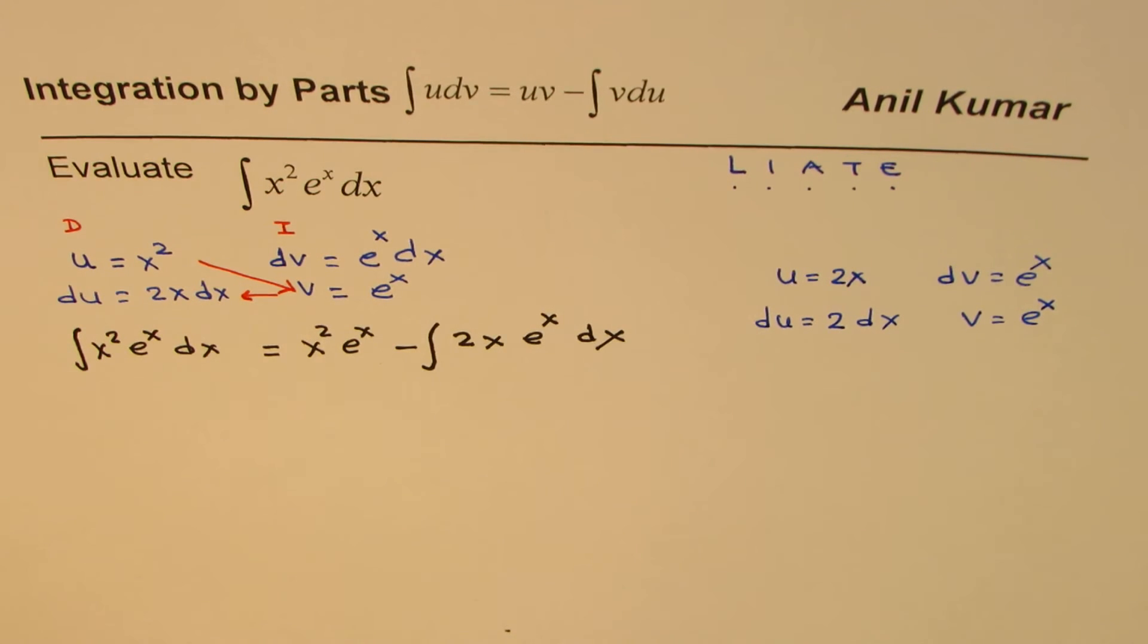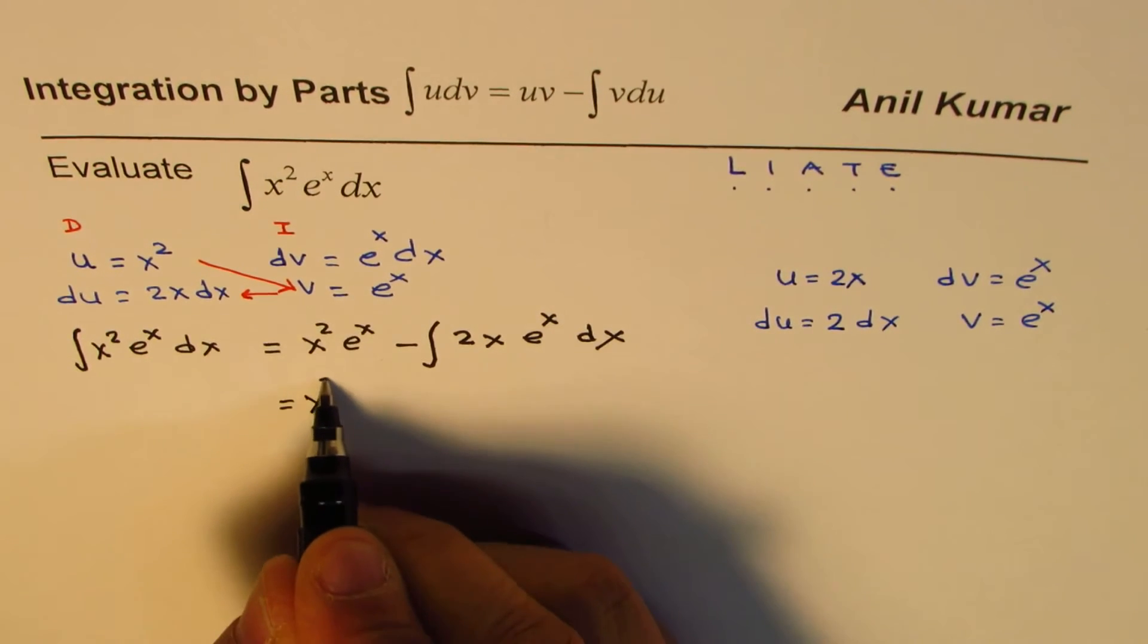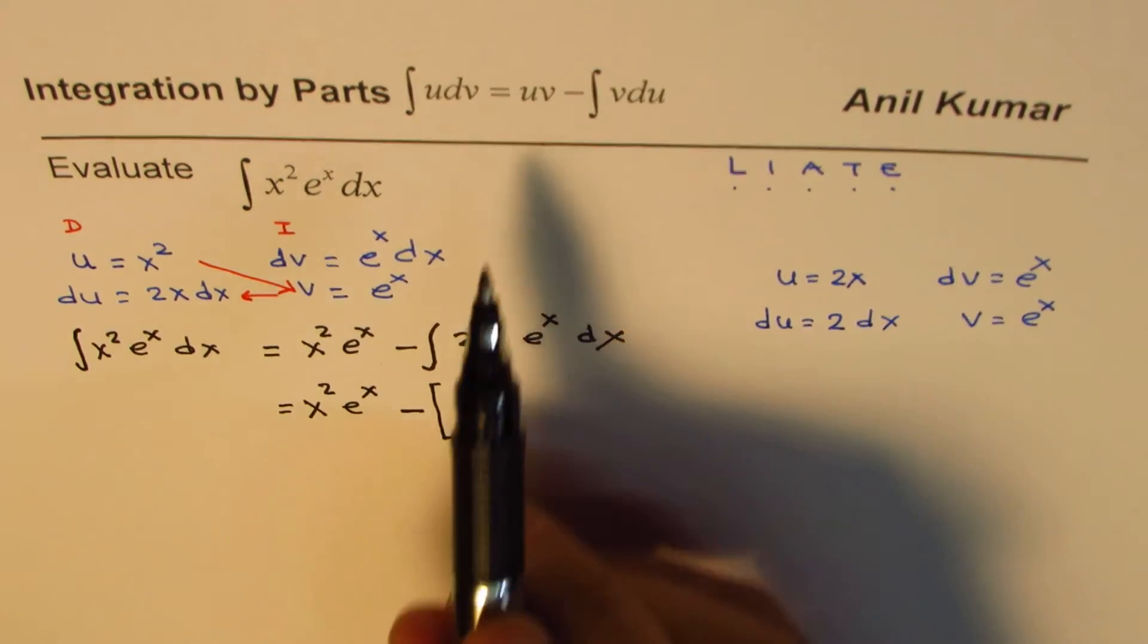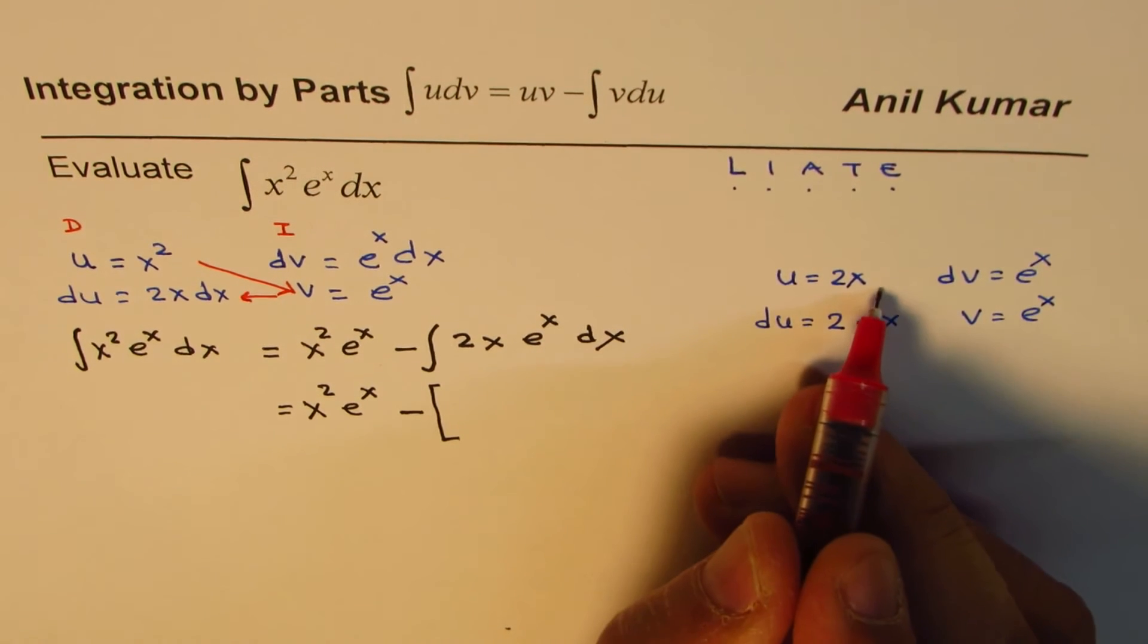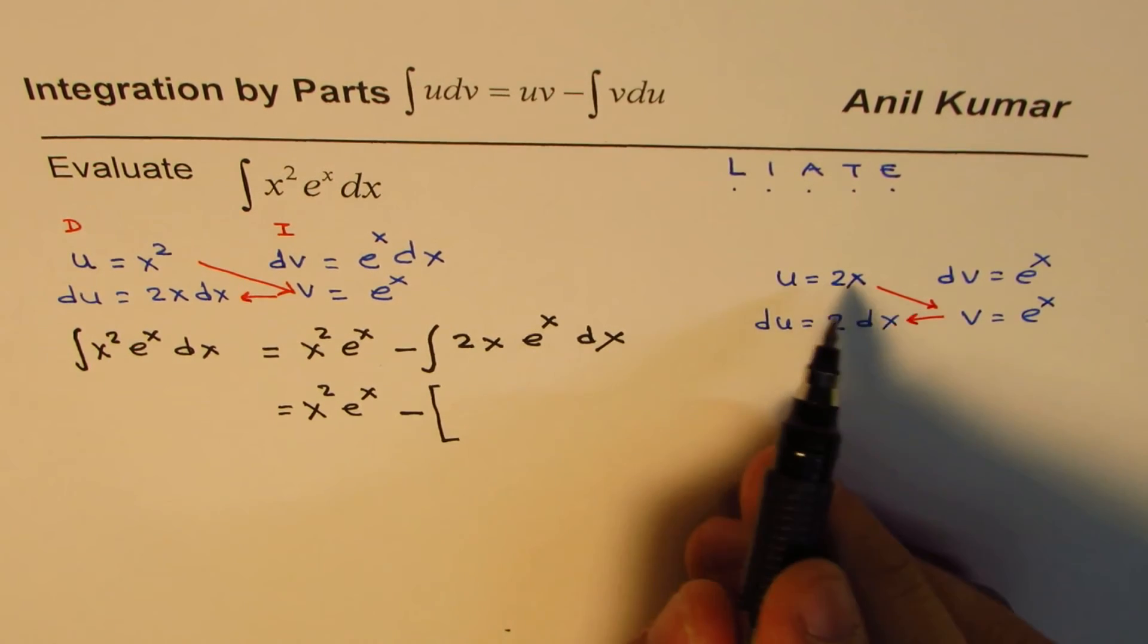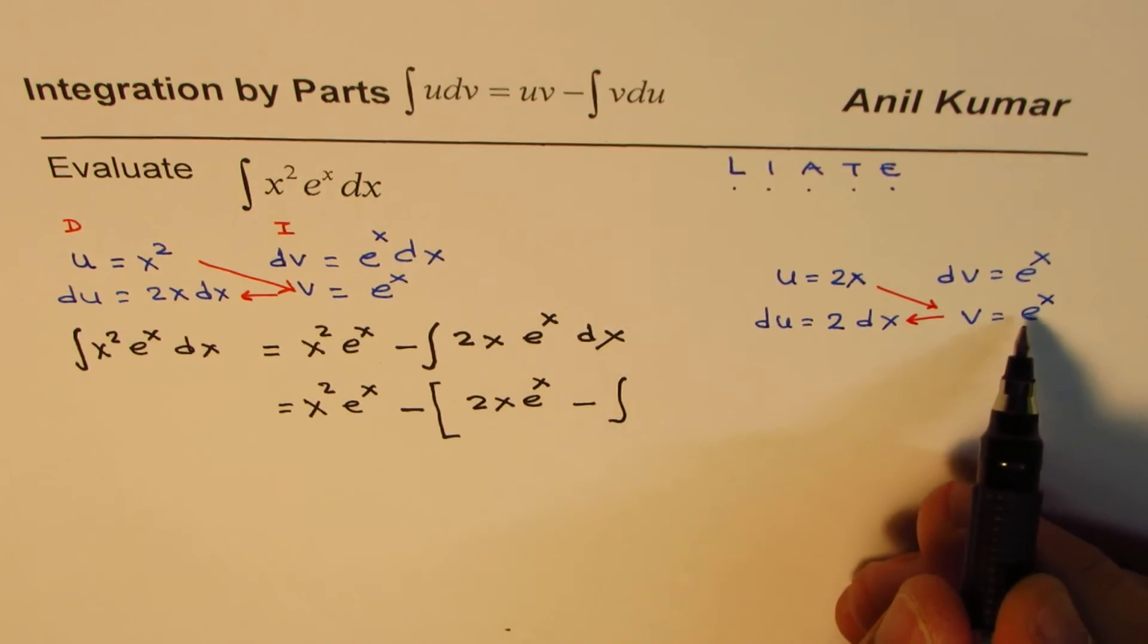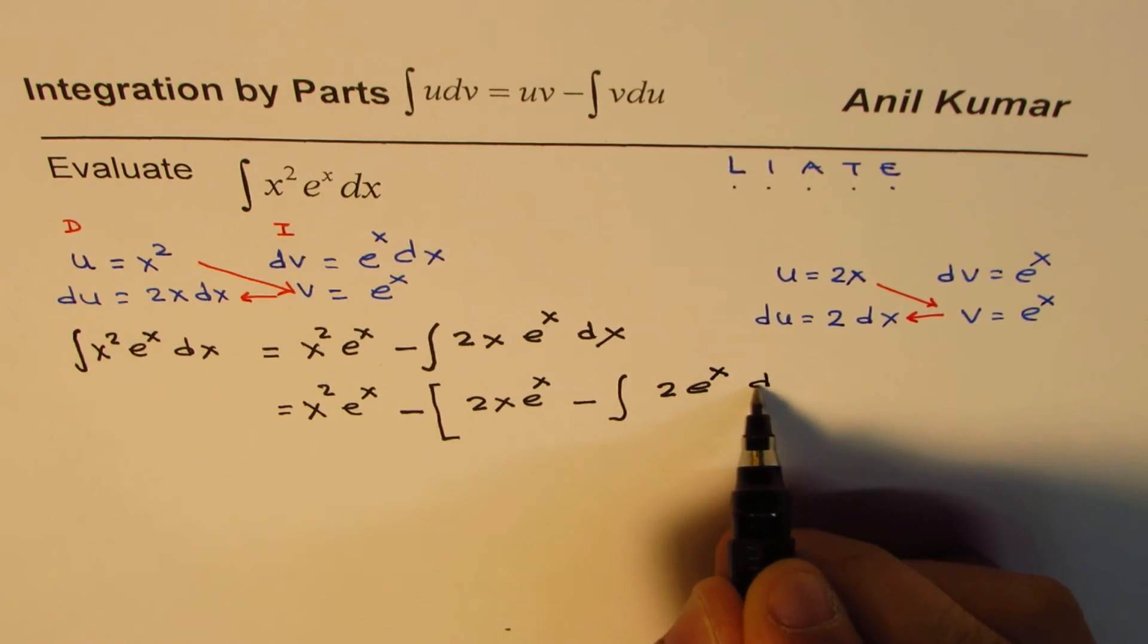We'll do second time integration by parts. We'll get x square e to the power of x minus—now this minus is outside, let me put a bracket here. Now let's focus on this. We have to again apply this formula, that is to say product of these two take away product of these with integral sign. Product of these two is 2x e to the power of x take away integral of these two which is 2 e to the power of x dx.